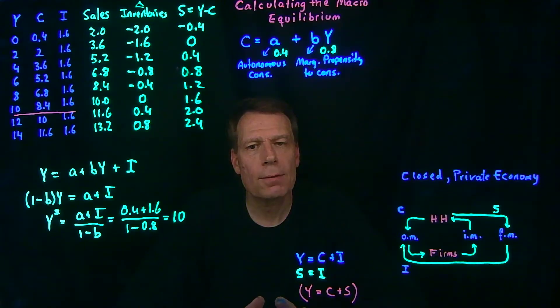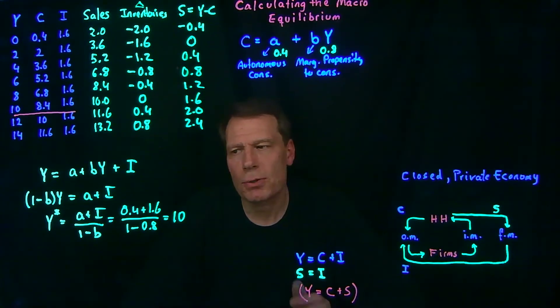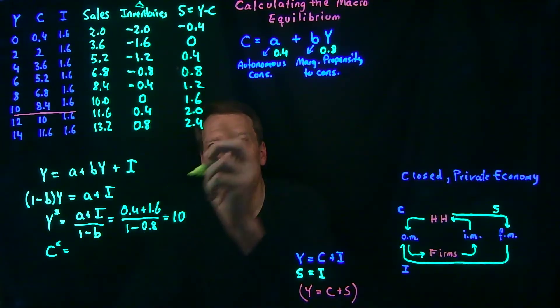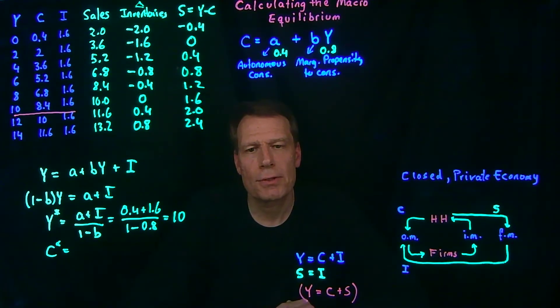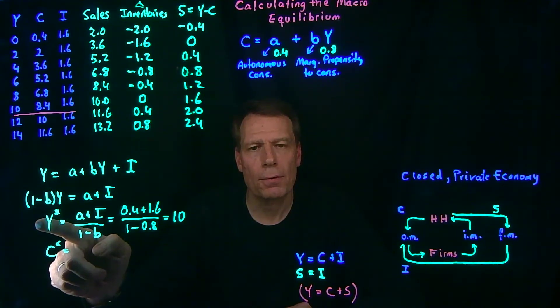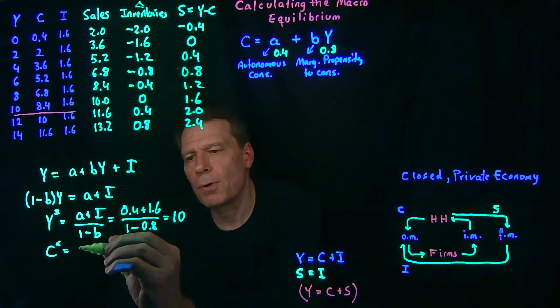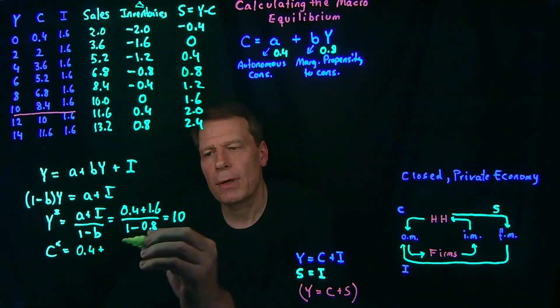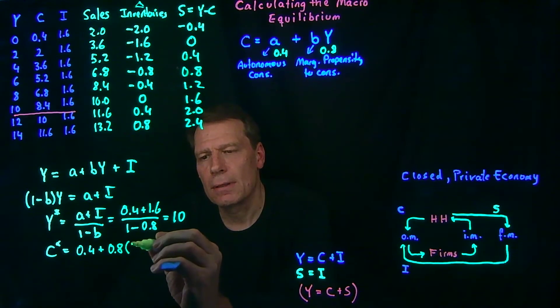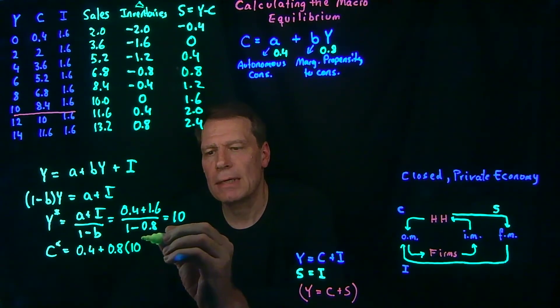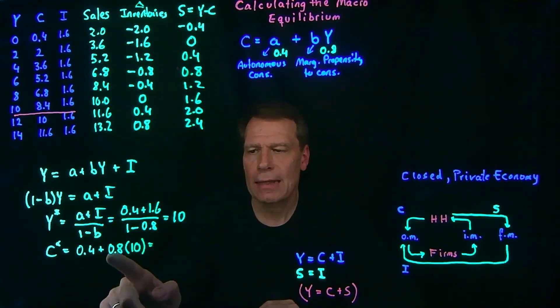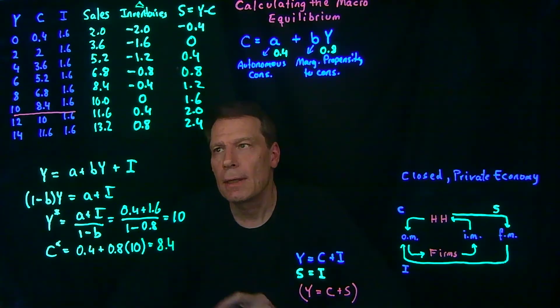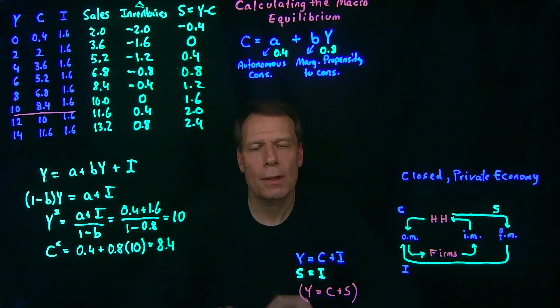We can also find the equilibrium level of consumption. That equilibrium level is just equal to what our behavioral equation tells us will happen when we have equilibrium level of income. So 0.4 plus 0.8 times 10, which is our equilibrium income. So that gives us 8 plus 0.4 gives us 8.4, the level of consumption we see in equilibrium in the table.